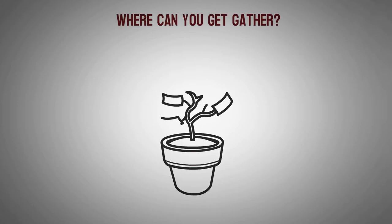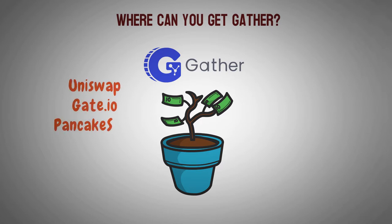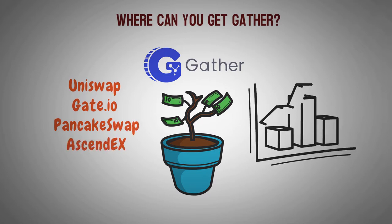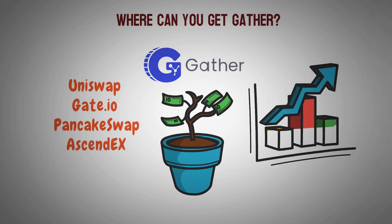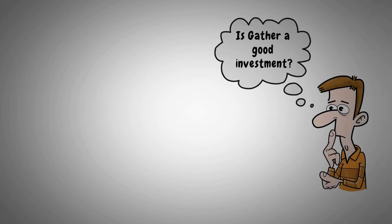So where can you get Gather? If you're interested in investing in Gather, you can buy some of their crypto on a few different exchanges. You've got Uniswap, Gate.io, PancakeSwap, and Ascend X. Right now, Ascend X has the highest volume, so buying it from there might be your best bet.